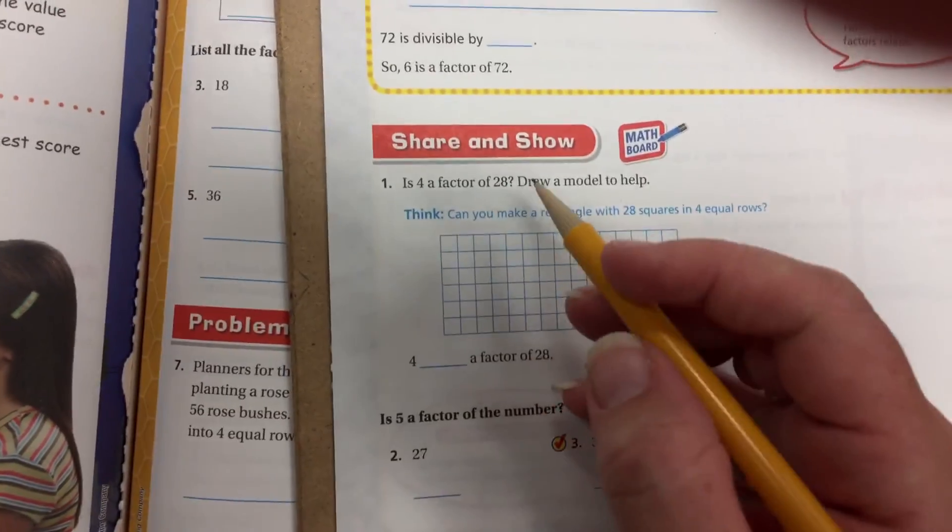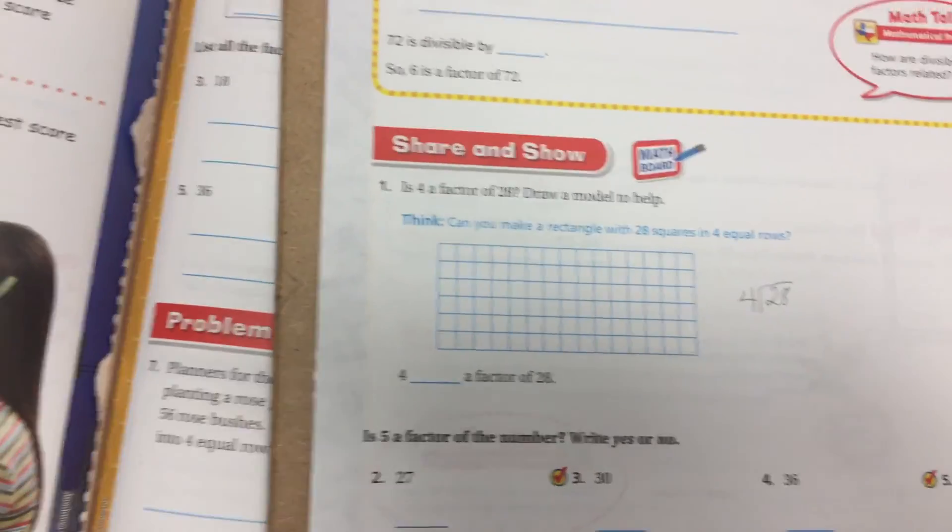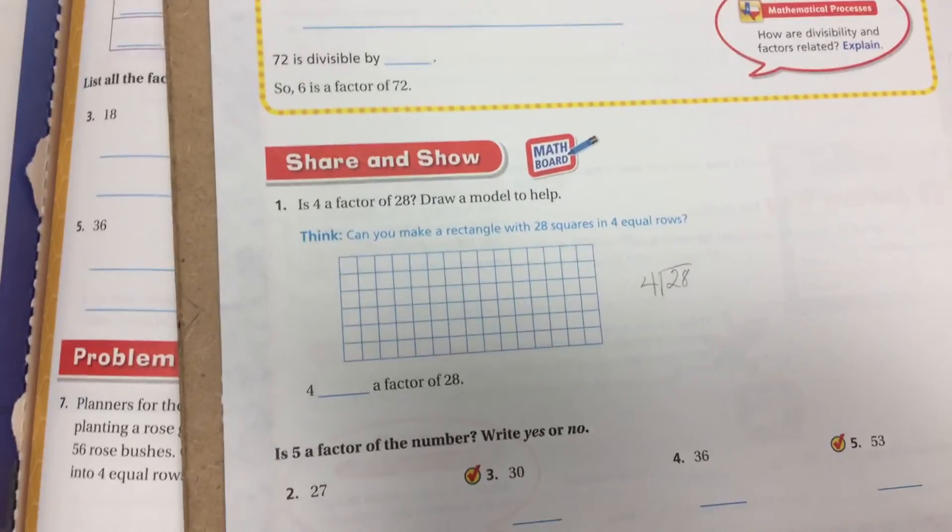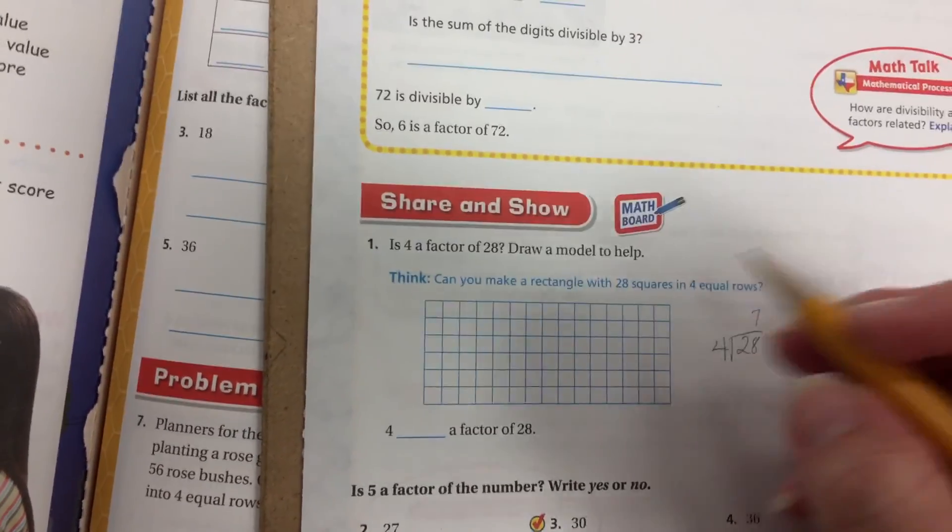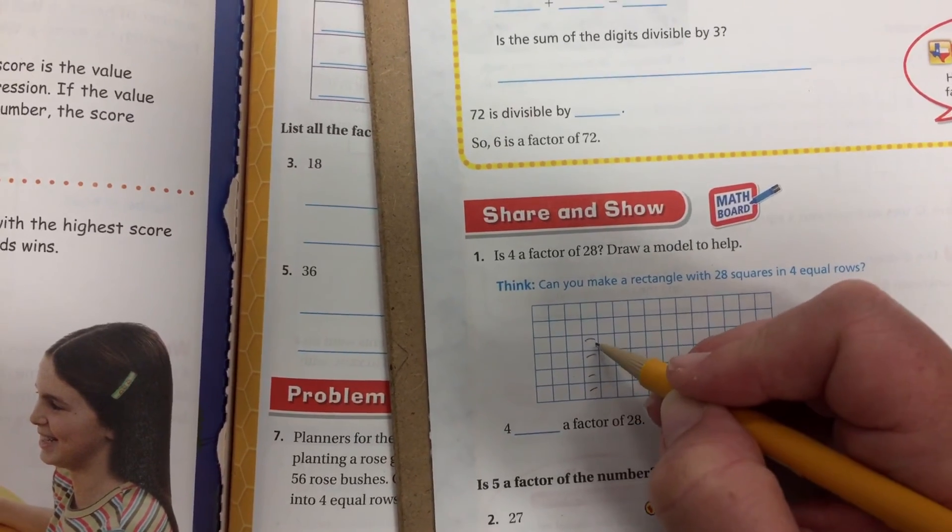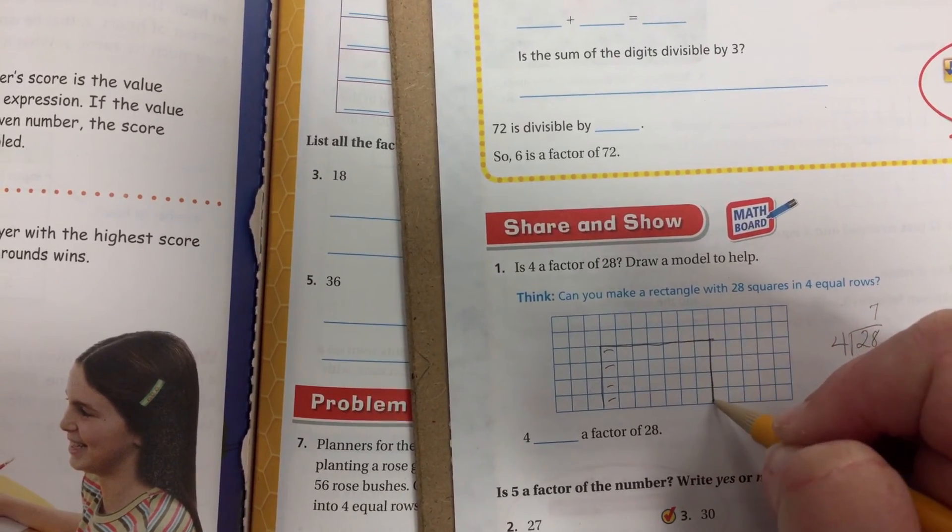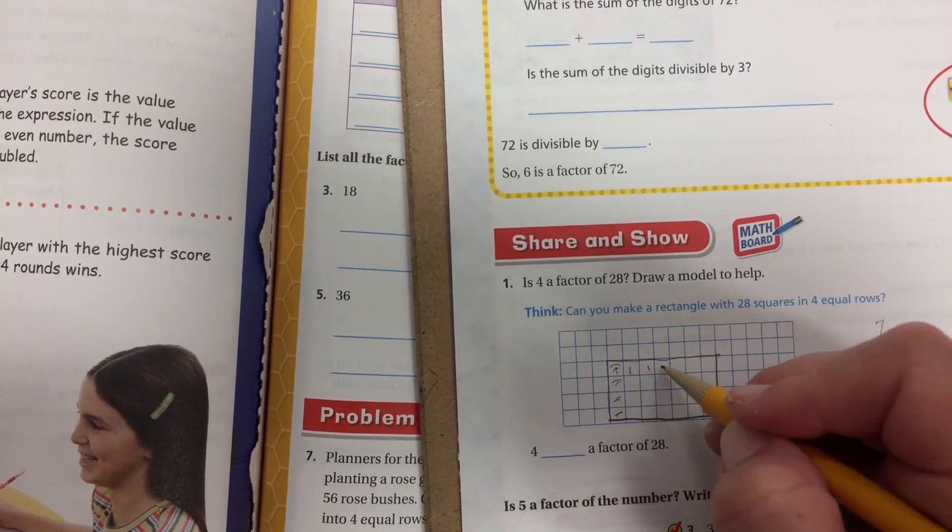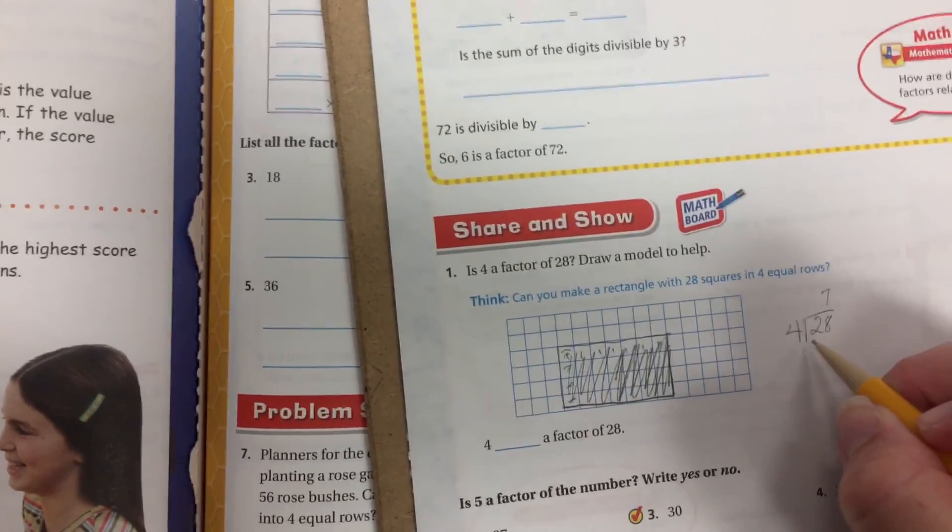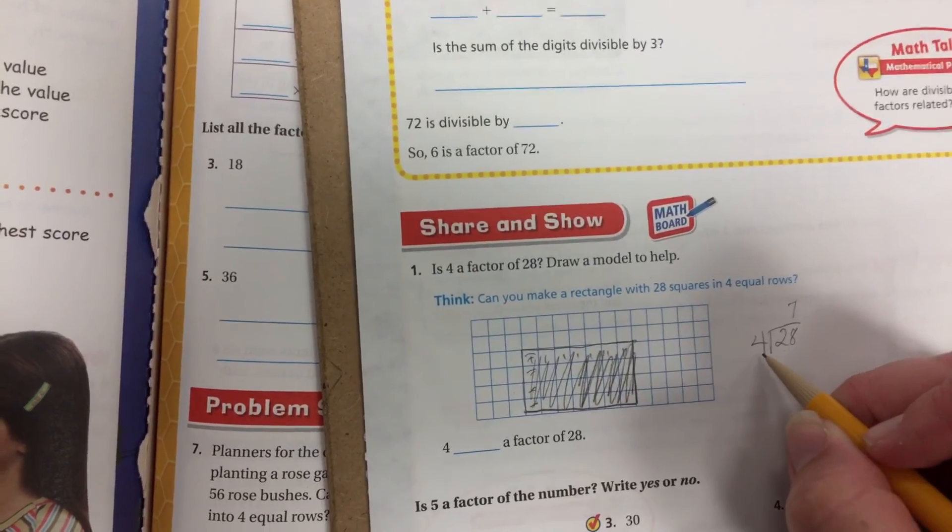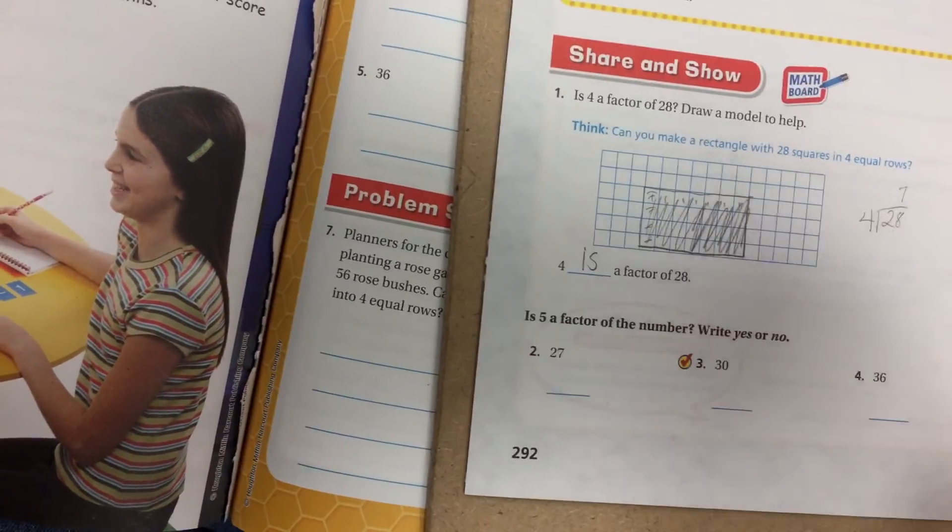So is 4 a factor of 28? In other words, if I were to divide 28 divided by 4, or is 28 evenly divisible by 4? The answer is yes. So how many times can 4 go into 28? That's 7. So here you would draw this as 1, 2, 3, 4. So here's your 4. 1, 2, 3, 4, 5, 6, 7. And that would be 28. In other words, can 28 be divided into 4 rows? Absolutely. And 7 are in each row. So 4 is a factor of 28.